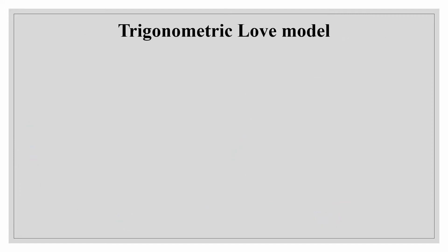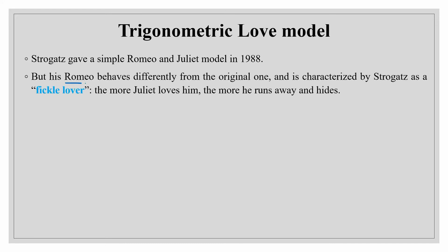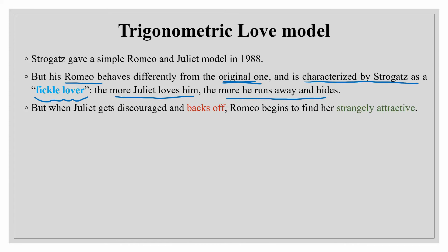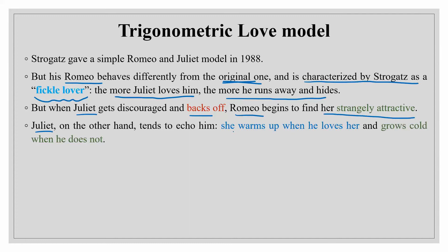Now we will see a simple trigonometric love model. So to arouse our interest in the linear model Strogatz gave a very simple Romeo and Juliet model in 1988. But his Romeo behaves differently from the original world and he characterized it by calling him a fickle lover. Fickle lover means the more Juliet loves him the more he runs away and hides. But when Juliet gets discouraged and backs off Romeo begins to find her strangely attractive. But Juliet on other hand warms up when he loves her and grows cold when he does not.